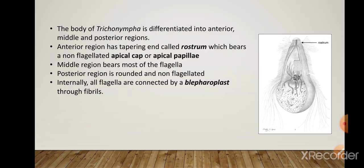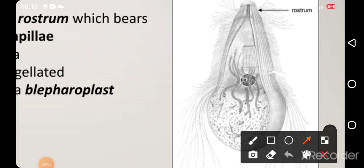The body of Trichonympha is differentiated into anterior, middle, and posterior regions. The anterior region has a tapering end called the rostrum, which bears a non-flagellated apical cap or apical papillae. The middle region bears most of the flagella, and the posterior region is non-flagellated.